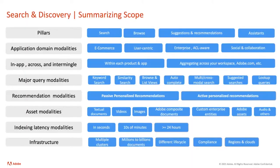Taking a step back, I've talked about the whole scope — maybe covering 70% of the whole thing. We talked about pillars, application domain modalities, query modalities, and asset modalities. Our indexing modalities are also very different: some have sub-second latency, others are fine with 24-hour latency. And the infrastructure is pretty big. This is the scope we're talking about.